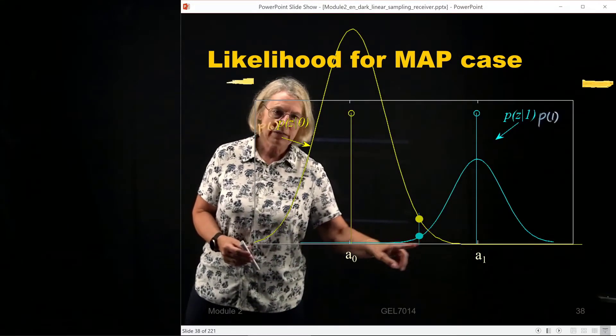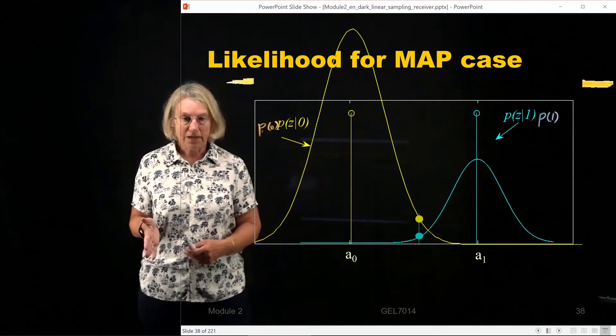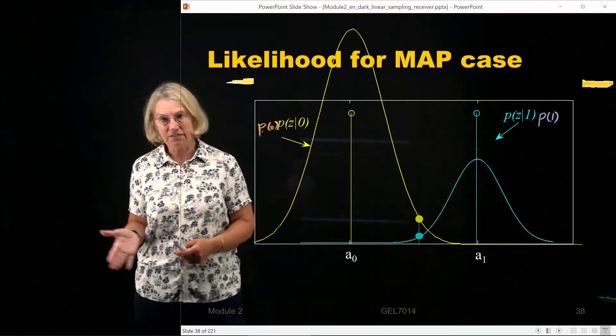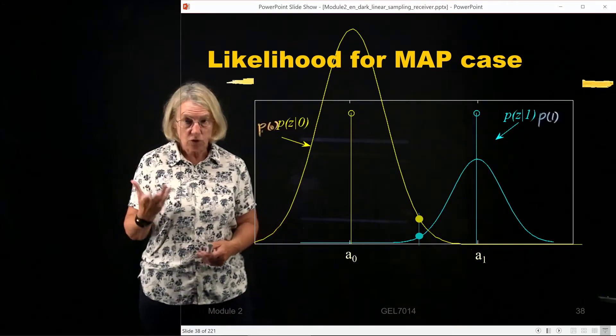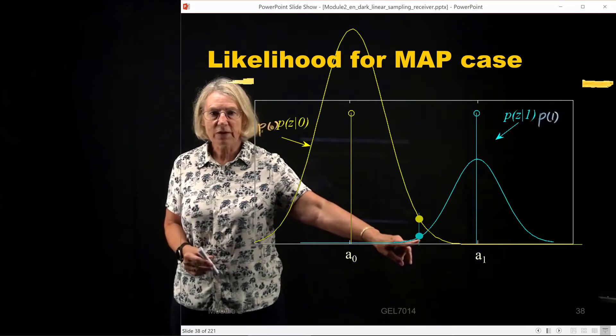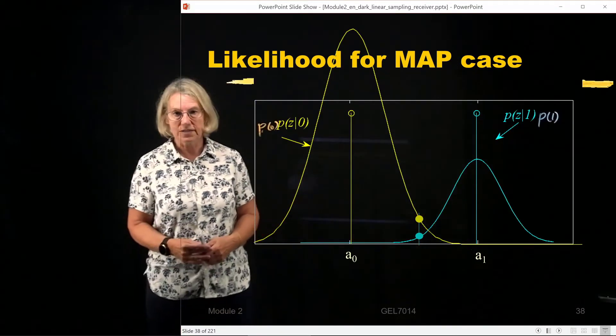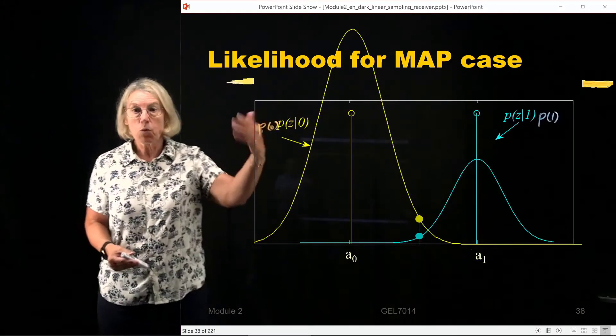So if I look now, because I'm to the left of the intersection, if I'm to the left of the threshold that I will be using, that means that the blue value, assuming a 1 was sent, is going to be lower than if A0 was sent. And that's because the 0 is more likely.